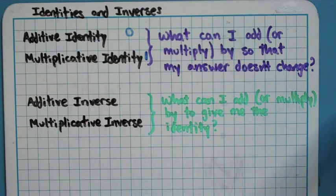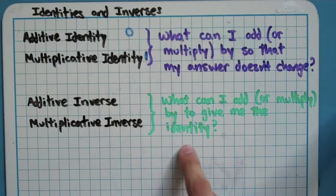This takes us to our second vocab word, an inverse. And, the idea of an inverse is talking about what can I add or multiply to cancel out whatever I had, so all I have left is the identity.